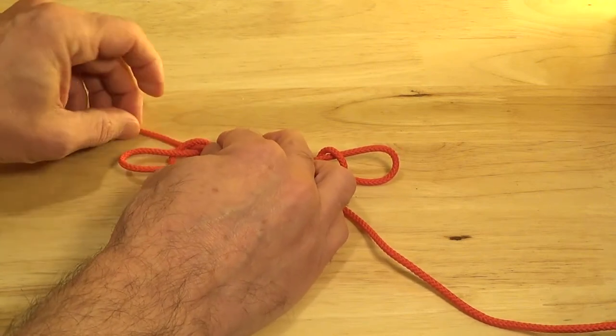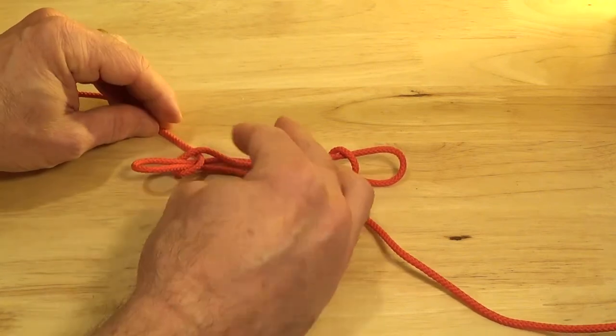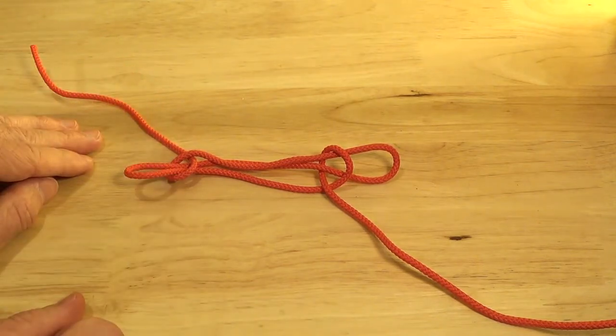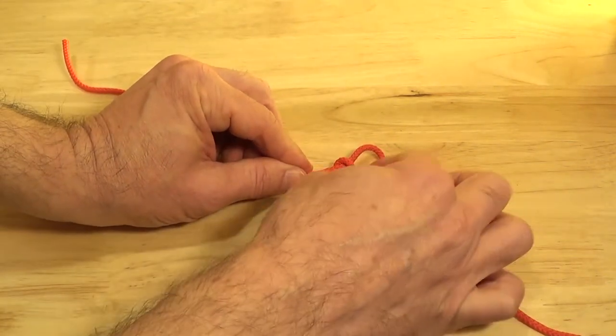To make a more permanent knot, add a second underhand loop and secure each end of the knot.